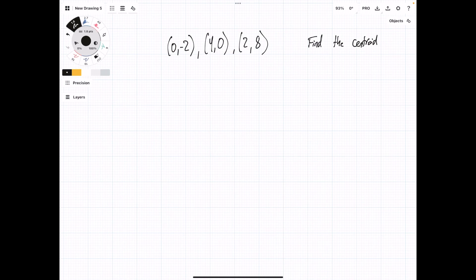So as I stated before, the centroid is located at the average of all of these points, and how we find that is we take a third of the sum of the x points. So this is going to be 0 plus 4 plus 2. And then for the y coordinate, it's going to be 1/3 times (-2 + 0 + 8).